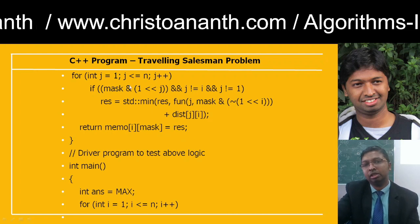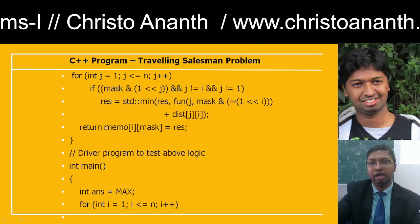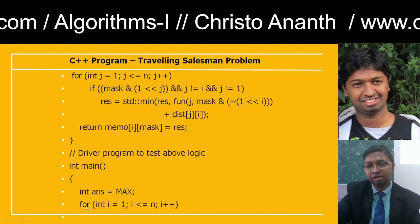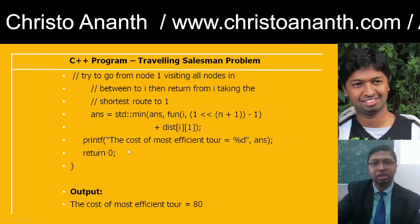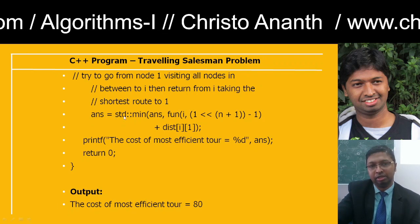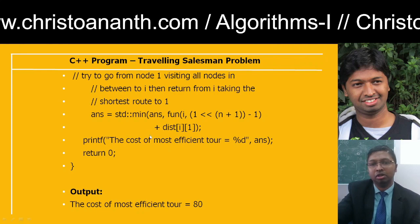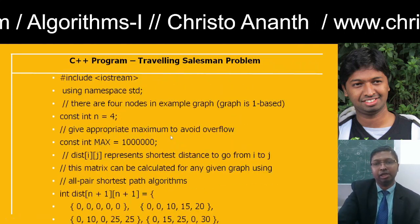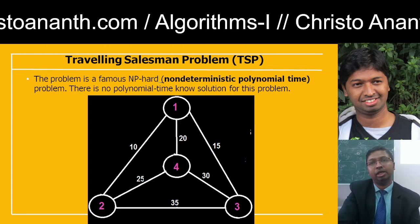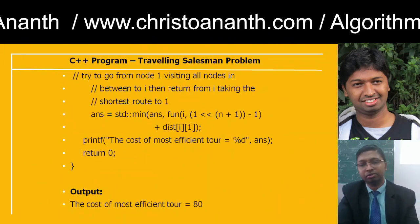The result is updated using the standard min function: result = min(fun(j, mask) + distance[j][i]). Then return memo[i][mask] = result. In the driver program, initialize int ans = MAXM, then loop for int i = 1; i <= n; i++, visiting all nodes exactly once. The shortest route is: ans = min(ans, fun(i, mask) + distance[i][1]). The cost of the most efficient tour, calculated as 10 + 25 + 30 + 15, equals 80.